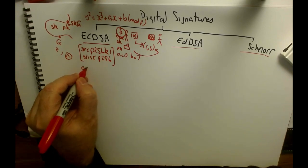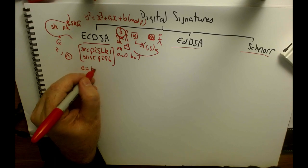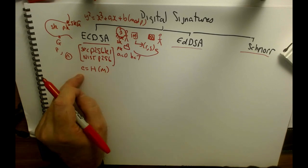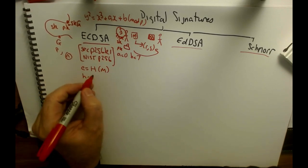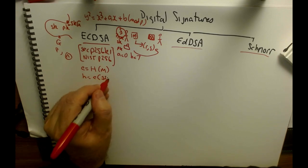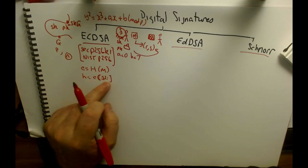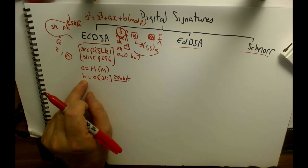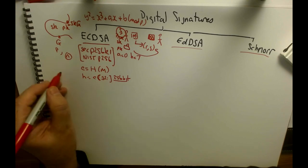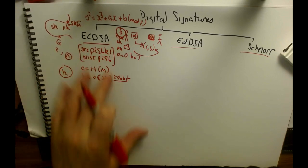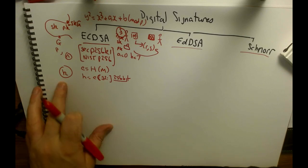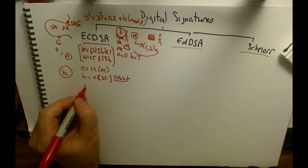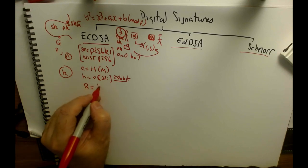For ECDSA, we take the message and create a hash of it — using SHA-512 for example — then mask off the lower 32 bytes, giving us a 256-bit hash. We then create a random value k. k varies the signature each time; we don't pass k, but it ensures the r and s values differ each time.